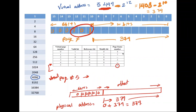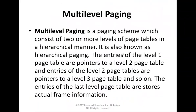In most systems, there is one page table per process, but each process can occupy a huge amount of virtual memory. For example, on VAX architecture, each process can have up to 2^31 (2 gigabytes) of virtual memory. Using 512-byte pages, that means up to 2^22 page table entries are required per process. Clearly, the amount of memory devoted to page tables alone could be very high.